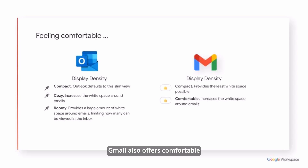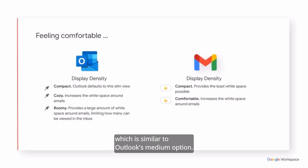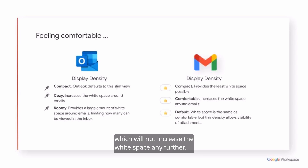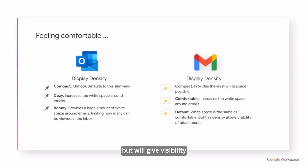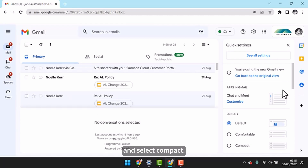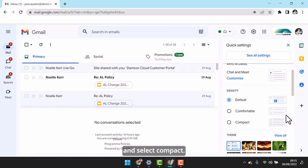Gmail also offers Comfortable which is similar to Outlook's medium option. Finally, Gmail's default density will not increase the white space any further but will give visibility on attachments in the email. To mimic Outlook, pop into Quick Settings and select Compact.